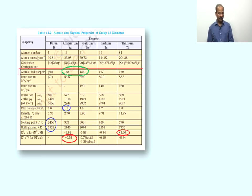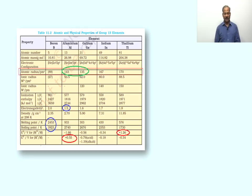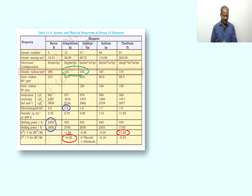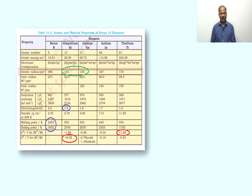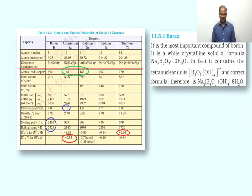Another property: the standard reduction potential for M³⁺/M is positive for Thallium and negative for all others. The standard reduction potential for the univalent cation will be positive for Aluminium. These are the atomic and physical properties of Group 13 elements with their irregularities — a quick revision. Data values need to be memorized so that exam questions can be answered.